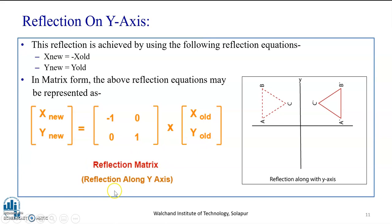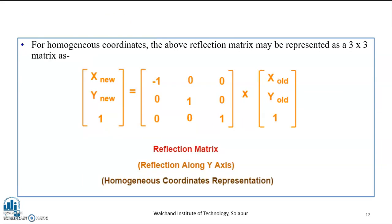Similarly, the reflection along the y-axis is also represented using a 3×3 homogeneous coordinate matrix: [x-new, y-new, 1] = [-1, 0, 0; 0, 1, 0; 0, 0, 1] × [x-old, y-old, 1]. This represents the reflection matrix along the y-axis using homogeneous coordinates. We have now understood 2D reflection along both axes and its representation using 2×2 matrix equations and 3×3 homogeneous coordinate form.